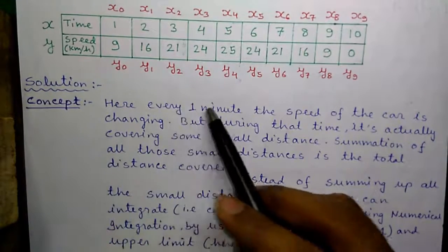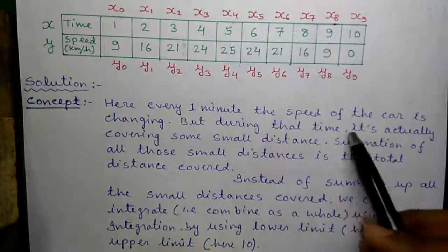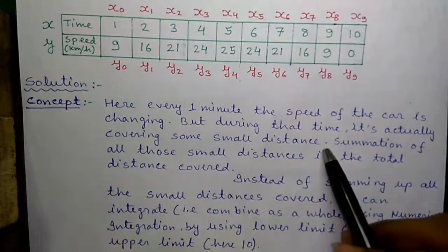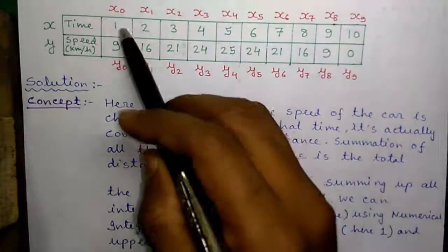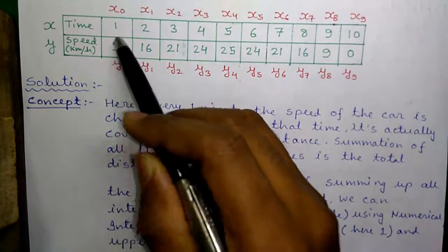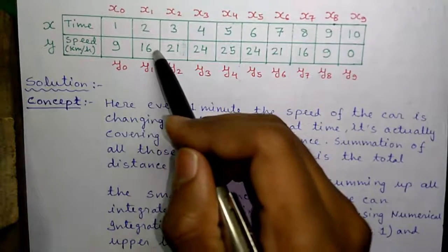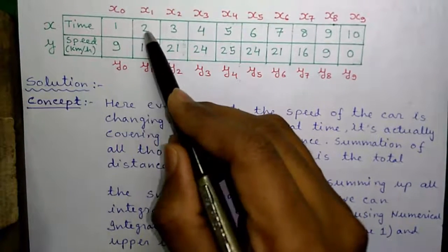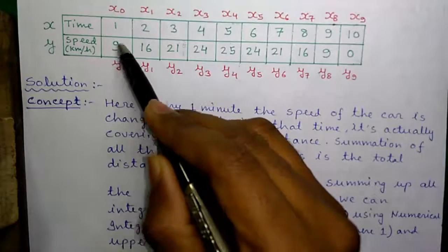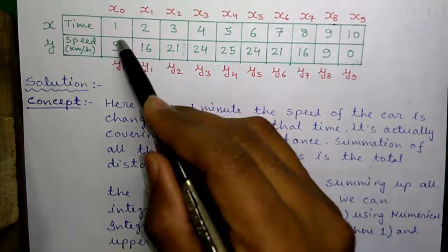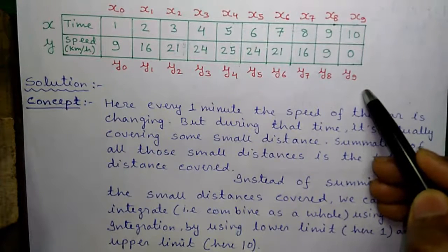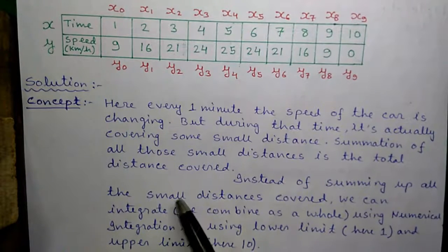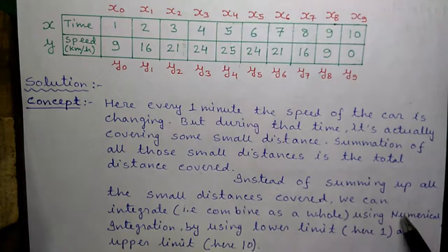Here every 1 minute the speed of the car is changing, but during that time it is actually covering some small distance. The summation of all the small distances is the total distance covered. At the first minute speed was 9 km per hour, but at the second minute speed changed to 16 km per hour. During that 1 minute from 1 to 2 minutes, speed was 9 km per hour, so it covered some distance at that speed. Summation of all small distances gives us total distance, but instead of summing them up we can integrate using numerical integration.